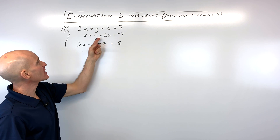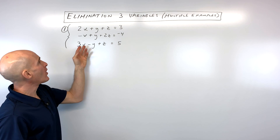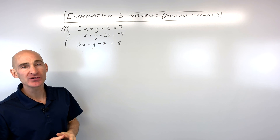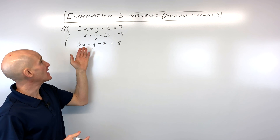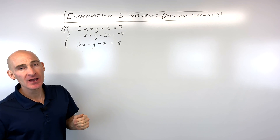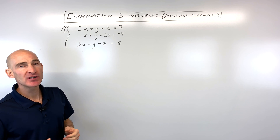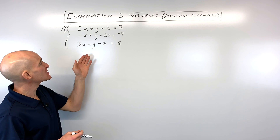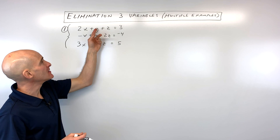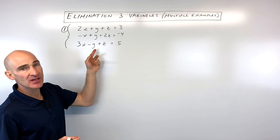The key here is to recognize that you want to eliminate one of the variables — either the x's, the y's, or the z's. In this particular example, it looks like it's going to be easier to start off by eliminating the y's.